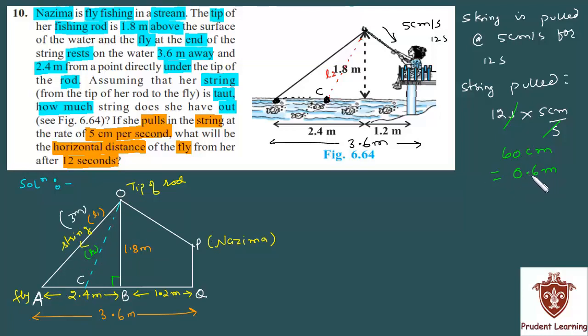The new string length L2 will be the original length L1 minus the length of string pulled, which is 0.6. L1 was 3 meters, so the new length is 3 - 0.6 = 2.4 meters. Let me write this: 2.4 meters. Now it becomes easier. Look at right triangle OBC. Again angle B is 90 degrees. Hypotenuse is 2.4, perpendicular is 1.8. We just need to calculate the base BC.